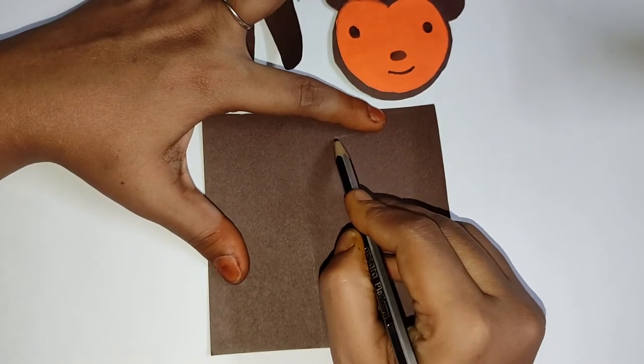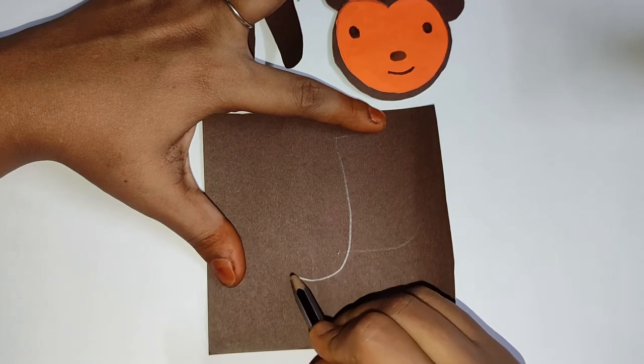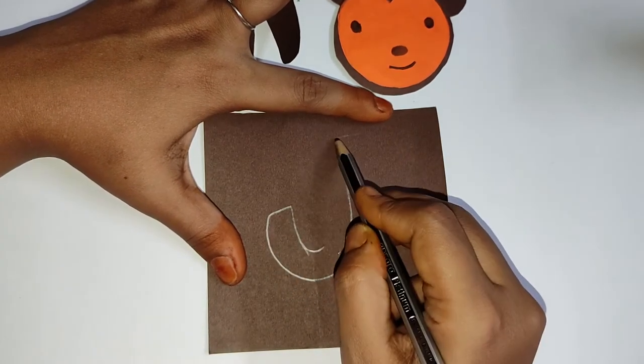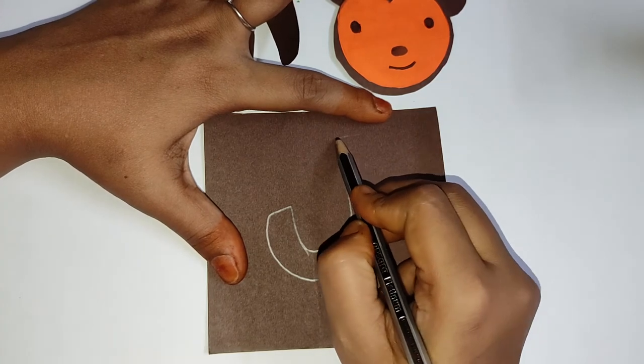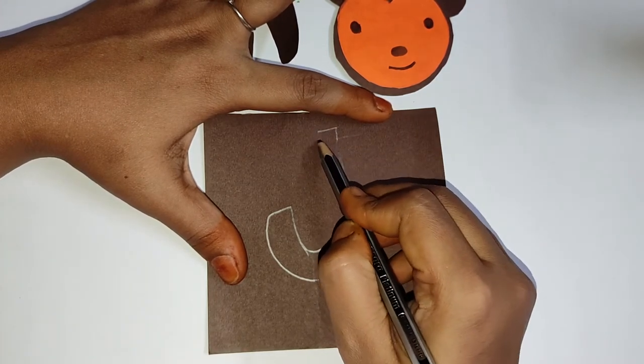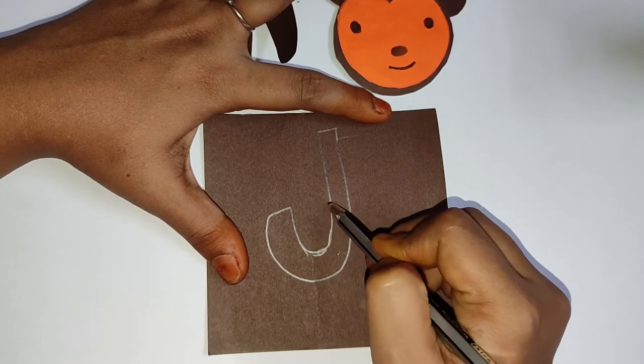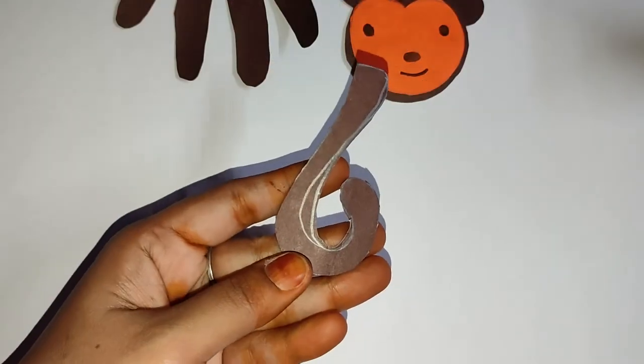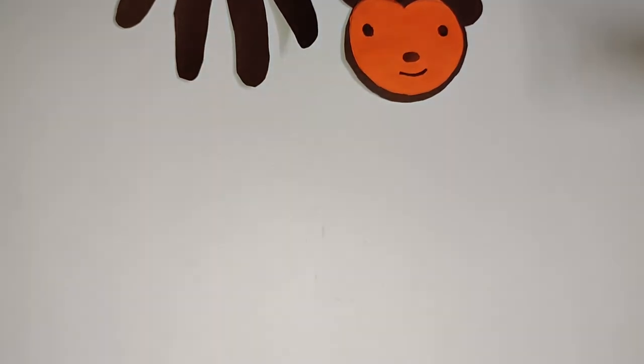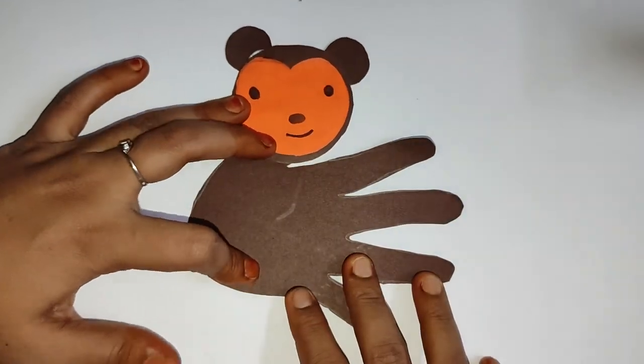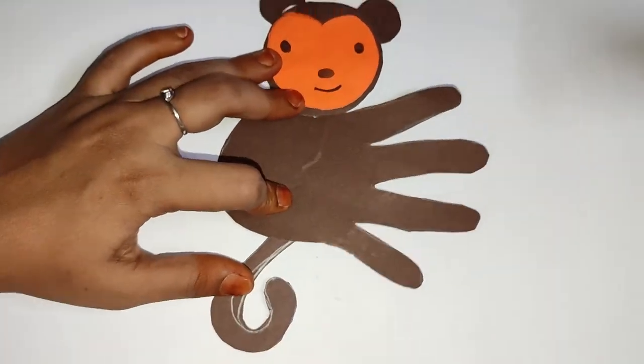Next we'll draw the tail. You can draw a big J-shaped or little curvy Q to make the tail. This is one way we can make the tail of the monkey.